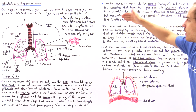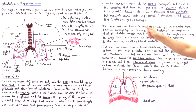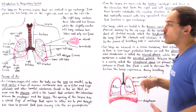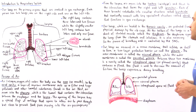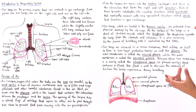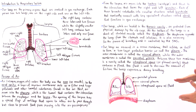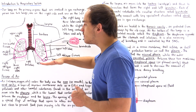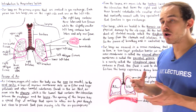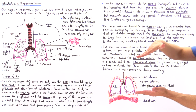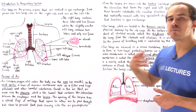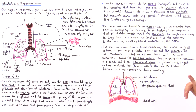Our lungs are based inside the thoracic cavity — the thorax is simply the term for the chest portion of the body. At the bottom of the lungs we have this sheet of skeletal muscle we call our diaphragm. The diaphragm not only separates the lungs from the stomach, small intestine, and large intestine, but it also moves up and down, which ultimately allows the process of breathing to take place.